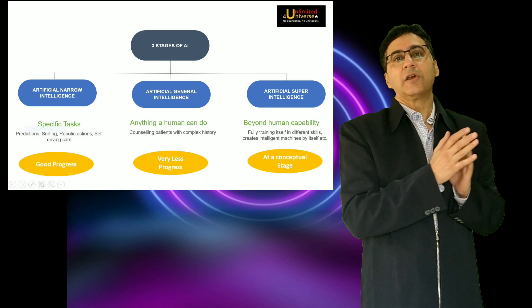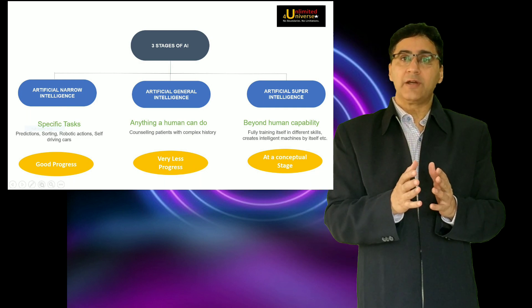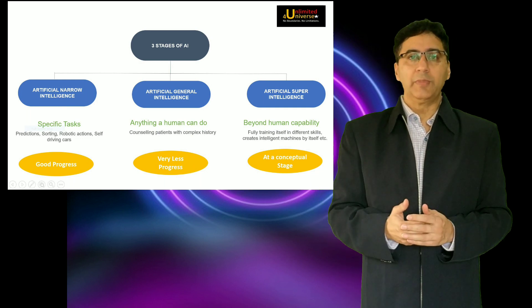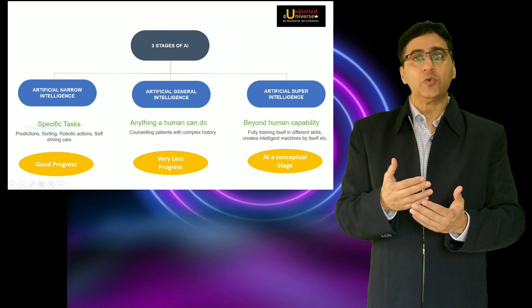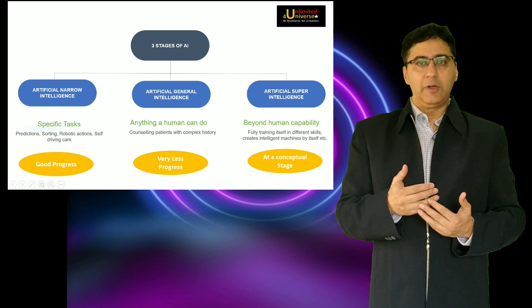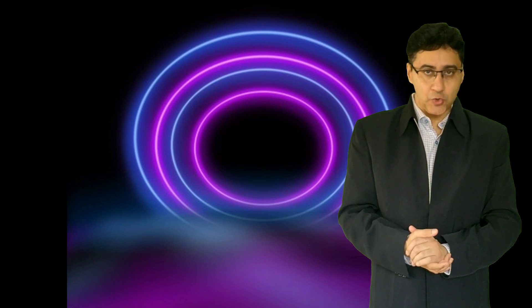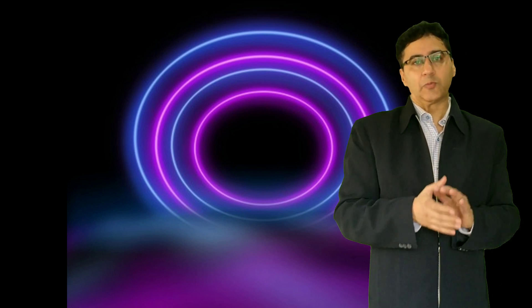Artificial Super Intelligence will be that intelligence where it has superseded a human being in the sense that it will be able to replicate itself, it will be able to train itself to do higher order tasks that even a human cannot do. So where are we in this progress?